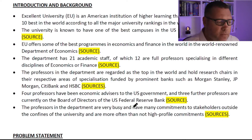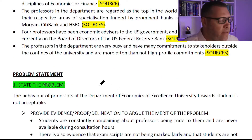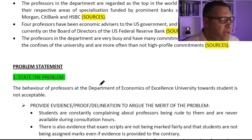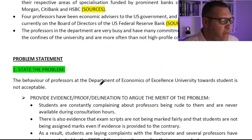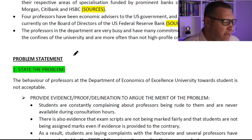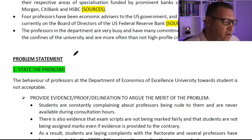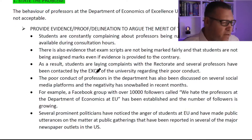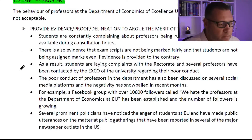So once I read this background, the sense I get is that we are working with a high-profile university, a high-profile department with more than 50% of academic staff being full professors who are well established in both academia and the private sector — and they are busy. That was important to establish before getting into the problem. A problem statement has two parts. The first part is where you actually state the problem itself — very simply, the behavior of professors at the Department of Economics at Excellent University towards students is not acceptable.